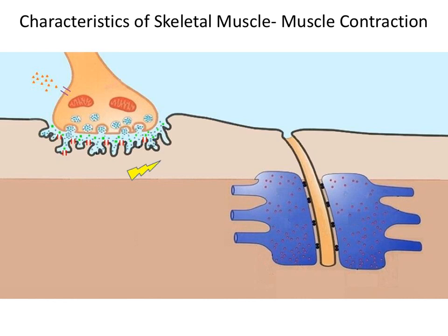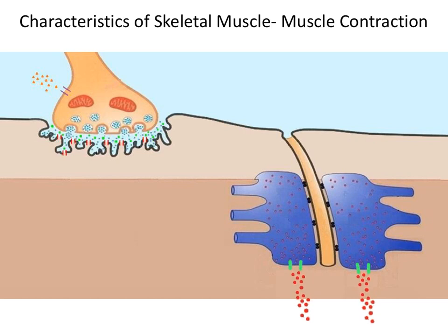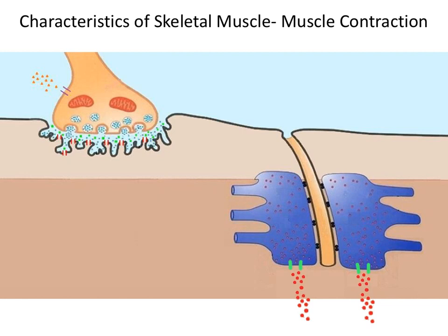The diffusion of sodium ions across the sarcolemma creates a new action potential in the muscle fiber. The newly created action potential travels down the sarcolemma and into the T-tubule. From the T-tubule, the action potential makes its way into the terminal cisternae and stimulates the opening of voltage-gated calcium ion channels, allowing calcium ions to diffuse out. Calcium ions that diffuse out of the terminal cisternae will be replenished by the calcium ions stored in the sarcoplasmic reticulum.